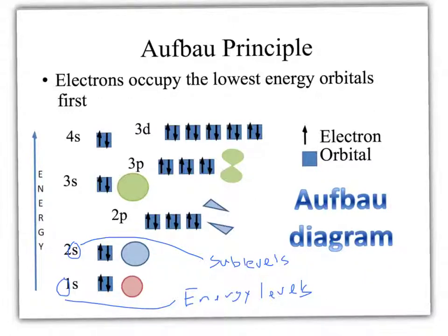The S sublevel is spherical — they look like spheres. The P's look like dumbbells. These orbitals are kind of like rooms. If I was the owner of a building and I could fill it with people, these orbitals would be like rooms and the electrons would be like people. If I was on the first floor, the first floor has only one room, so I can only fill two people per room.